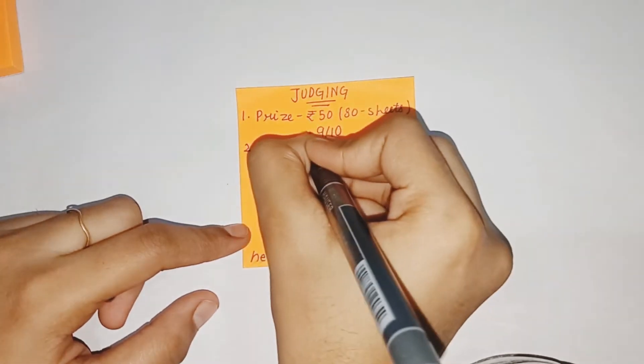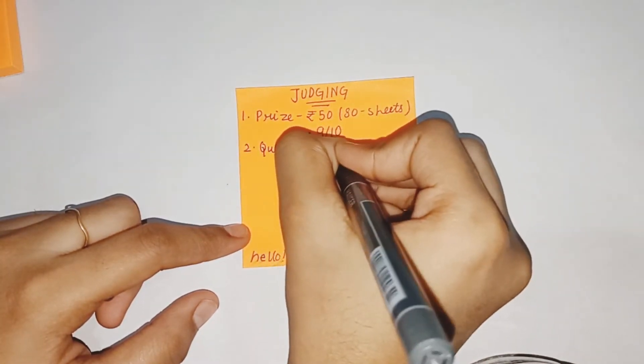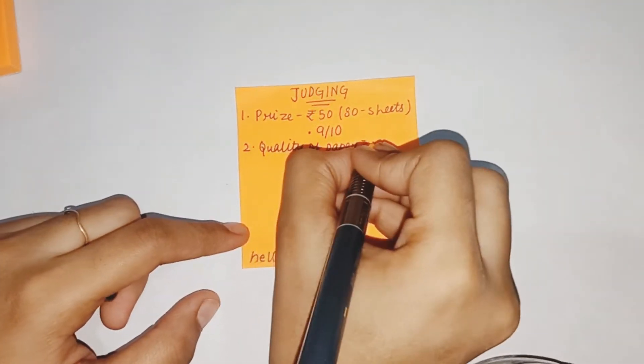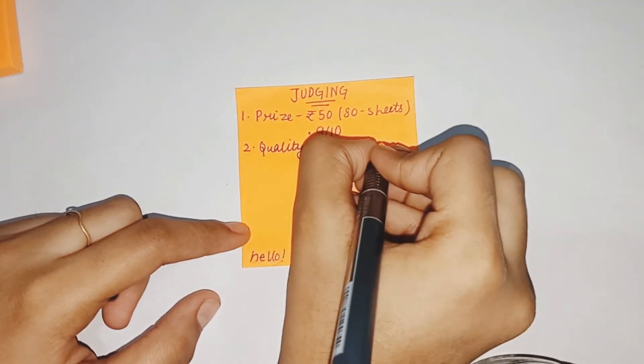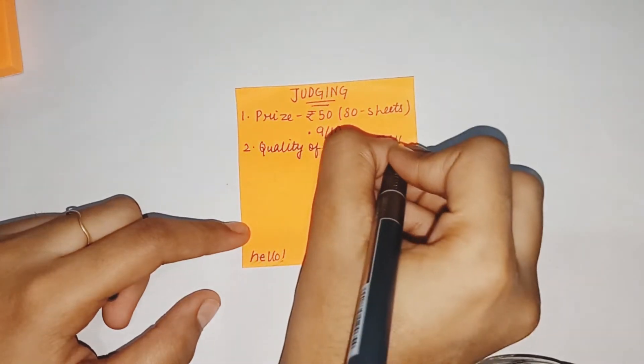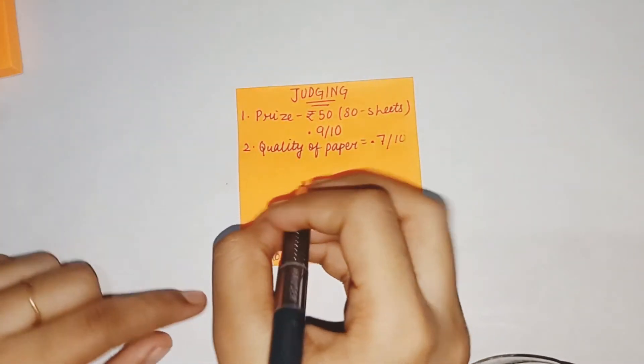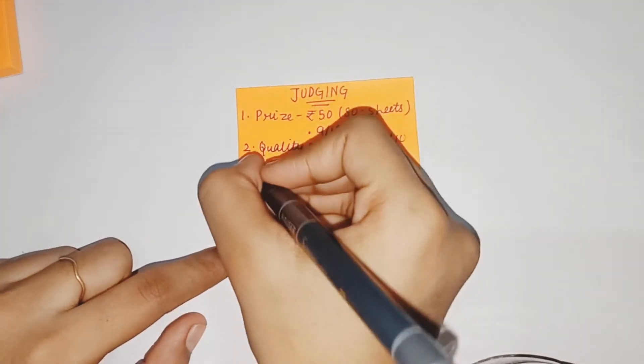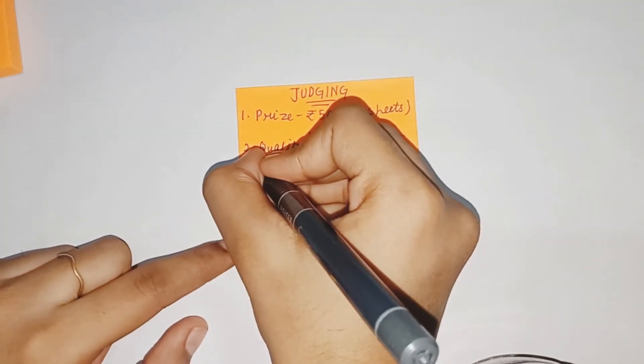My second criteria is the quality of the sticky note, because quality over quantity. So quality of the paper, I would give a 7 because it's not that nice. You can see it's getting off the table from the side because I tried re-sticking it again and again, so re-sticking is not that good.